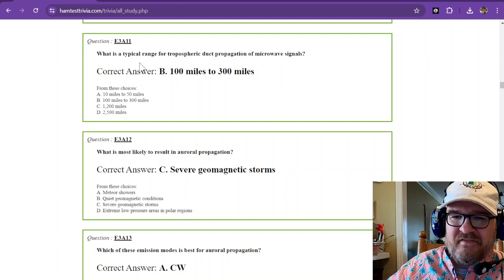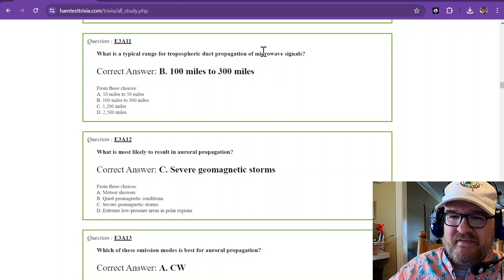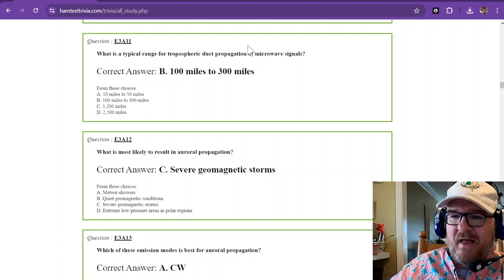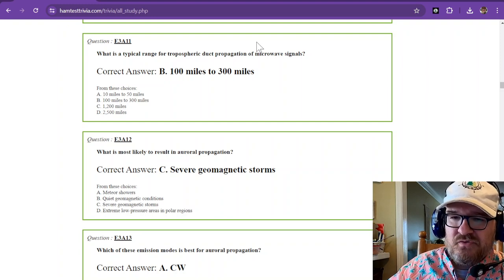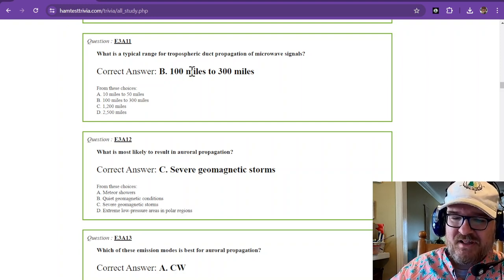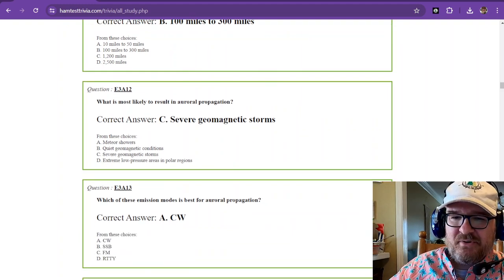What is a typical range for tropospheric duct propagation of microwave signals? That is going to be approximately 100 miles to 300 miles. You should hopefully remember some of that from your technician license exam. Question number 12.